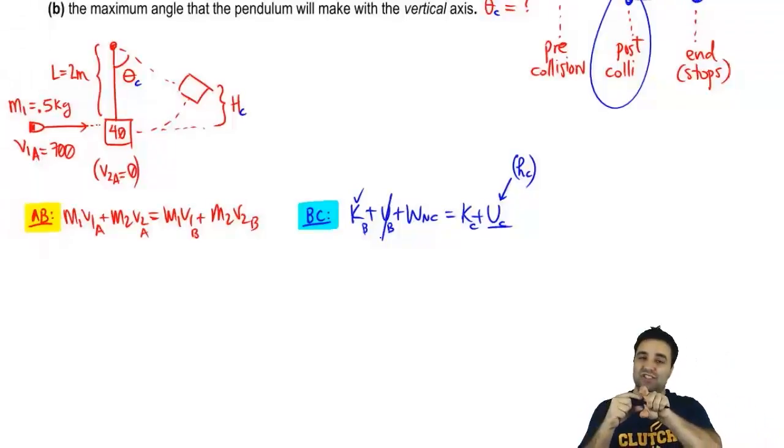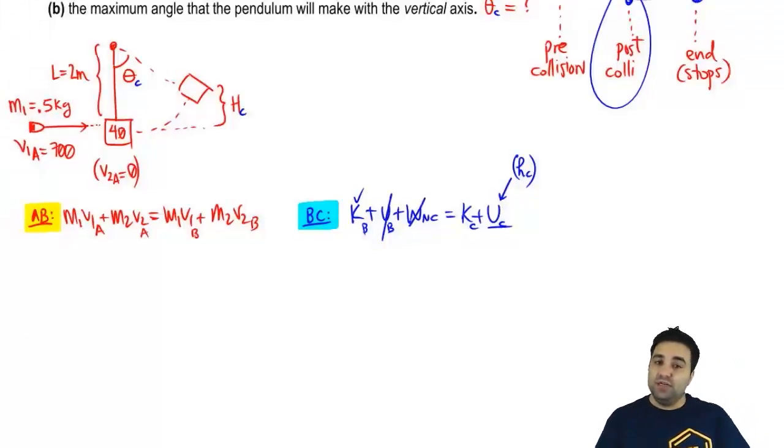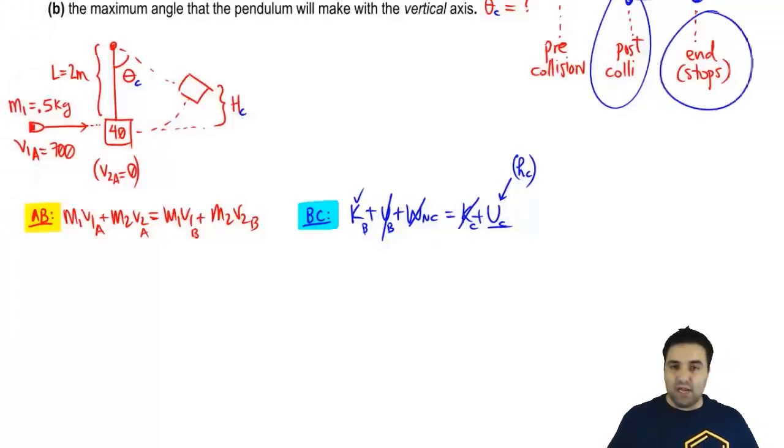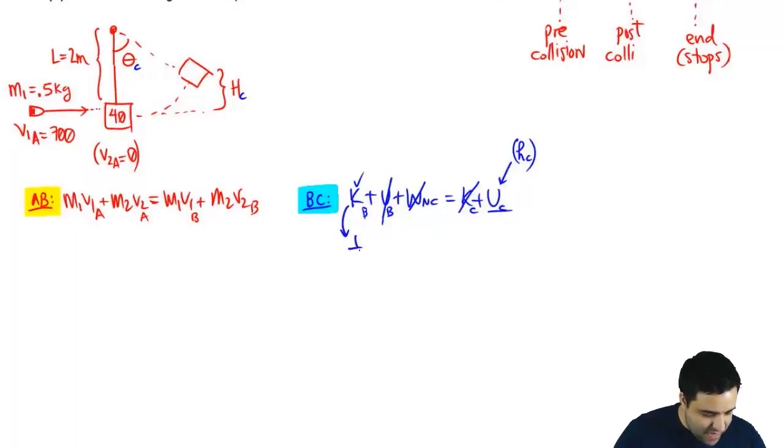Okay. Now, B is post-collision. The block just started moving, but it hasn't really gained any significant height yet, which is why we say the potential energy is zero. There's no work because there's no friction and you're not doing anything. You're just watching. The kinetic energy at point C is zero because the block stops at the end. So there's no kinetic energy because at the highest point, it stops. And there is potential energy because you've gained some height. So let's expand this. This is going to be half MVB squared.